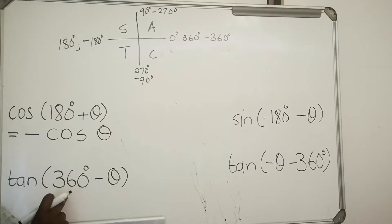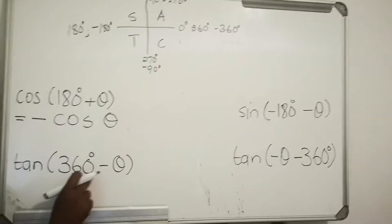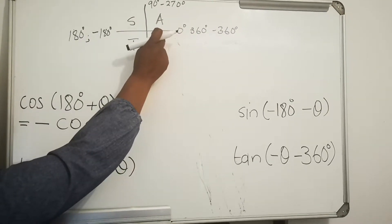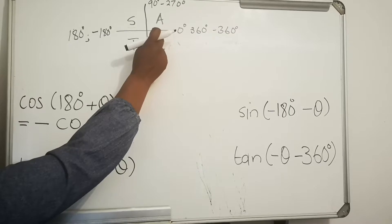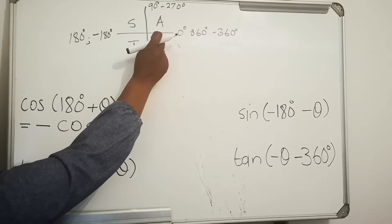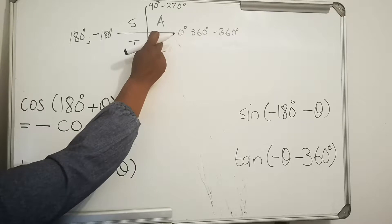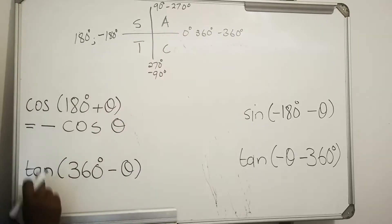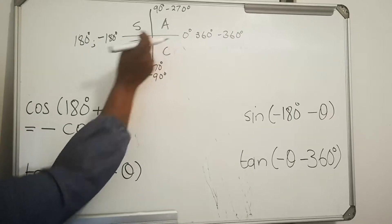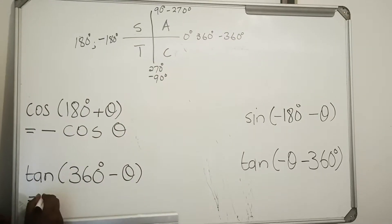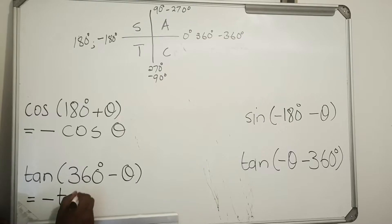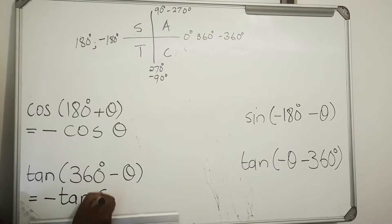Let's look at another example: 360 minus. A number that is smaller than 360 will be in the fourth quadrant. I found the quadrant — my ratio is tan. How is tan in the fourth quadrant? Tan is negative. So I write negative, then write the ratio tan, then write my angle.